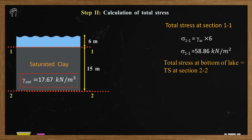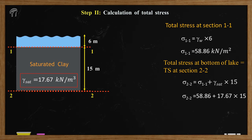Similarly, total stress at Section 2-2 will be equals to total stress at Section 1-1 plus the unit weight of the saturated soil, γ_sat, multiplied by the height of that soil, 15. Therefore, total stress at Section 2-2 will be equals to 58.86 plus 17.67 multiplied by 15, which equals 323.91 kN/m².